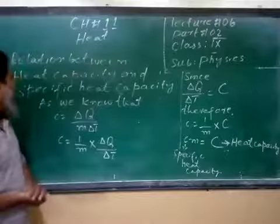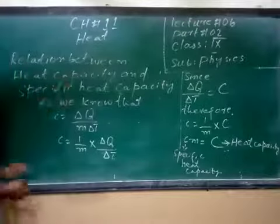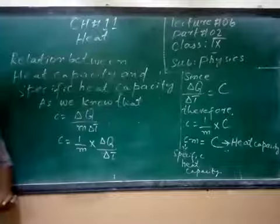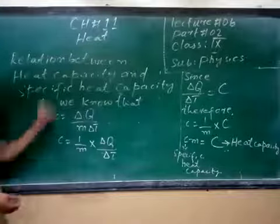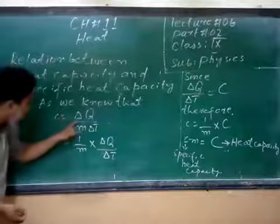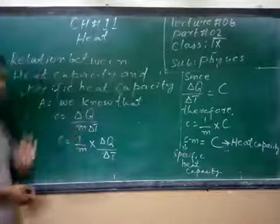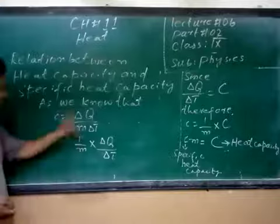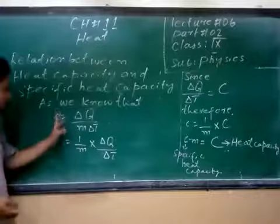Now, what is the relationship between heat capacity and the specific heat capacity? As you can see, we have a formula for the specific heat capacity. c = ΔQ/(m·ΔT), delta Q divided by m delta T. That means...